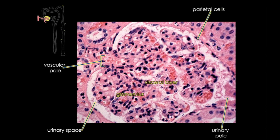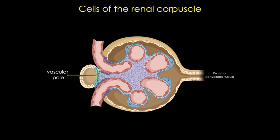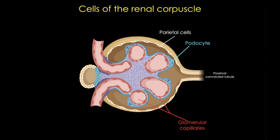Now let's take an even closer look at the components that make up the corpuscle. The outer parietal layer consists of simple squamous cells supported by basal lamina, and these become more cuboidal as they exit the capsule into the proximal tubule. The visceral layer, the inner layer, consists of stellate or star-shaped cells called podocytes, which together with the capillary endothelial cells form the renal filtration apparatus. From the cell body of each podocyte, processes extend, curve around the glomerular capillary, and give rise to more processes called pedicels or end feet, which cover most of the capillary surface and contact the basal lamina.